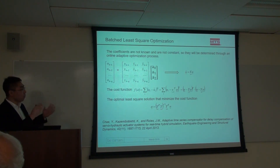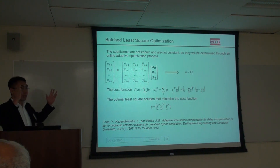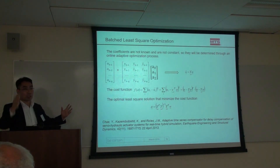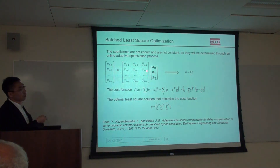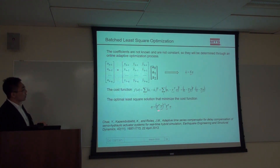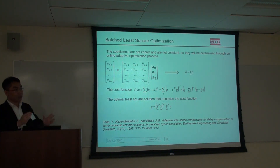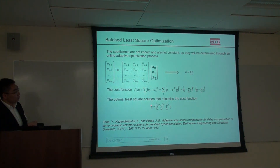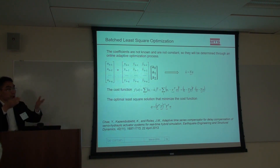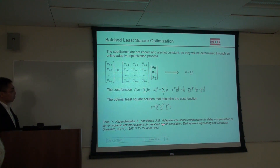You take a window of, say, 1000 data points — displacement, velocity, acceleration — forming a 3×1000 matrix, then solve the optimization to get the three coefficient values. This is adaptive in the sense that it's solved every time step: at 1024 Hz, every millisecond you solve the algorithm and get a new set of coefficients. As your system dynamics change, the controller adapts accordingly.